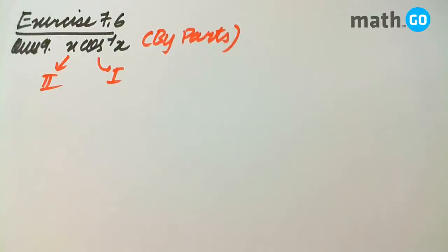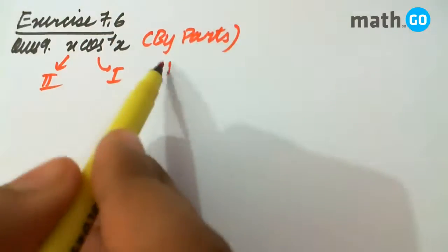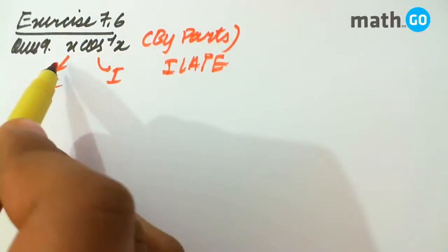Exercise 7.6 question number 9, x cos inverse x. Obviously, this has to be done by parts and since it is the inverse function, so by I late rule, this will be considered as the first and this is the second.